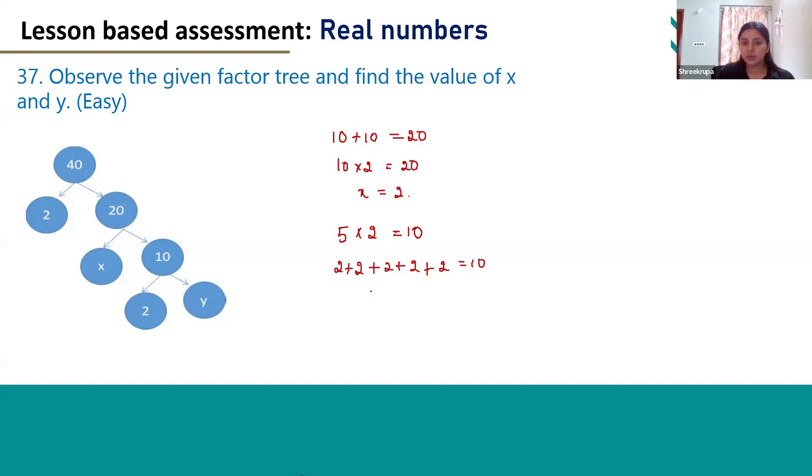Correct? So 2 into 5 will become 10. So the other factor of 10 will become 5. The value of y is 5 here. x is 2 and y is 5.